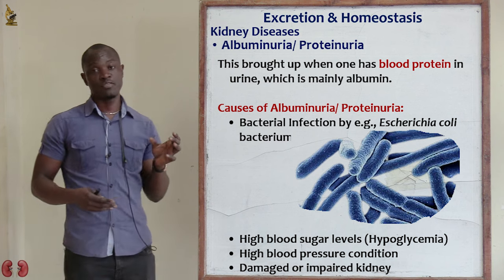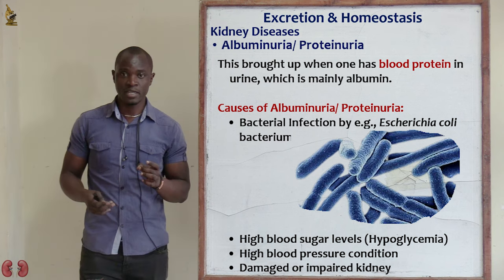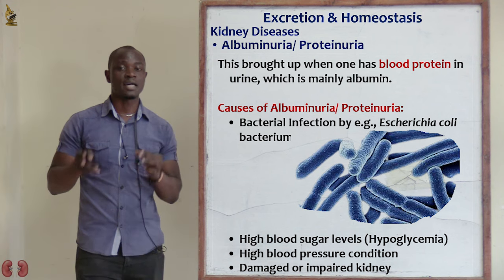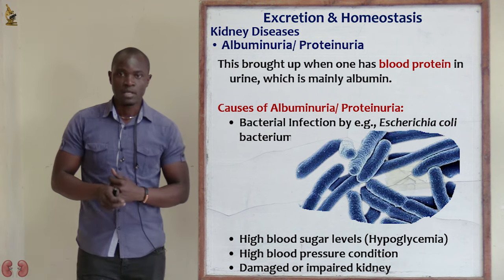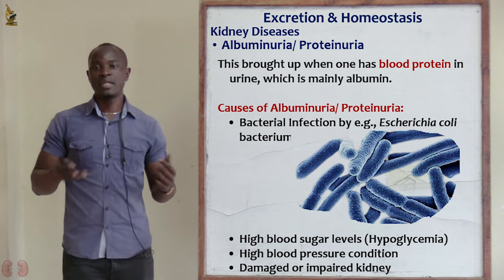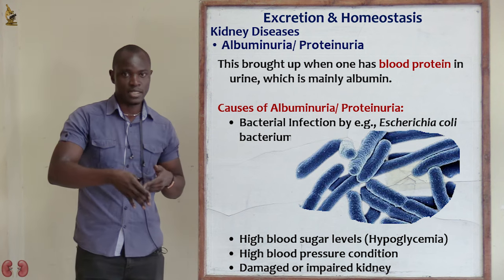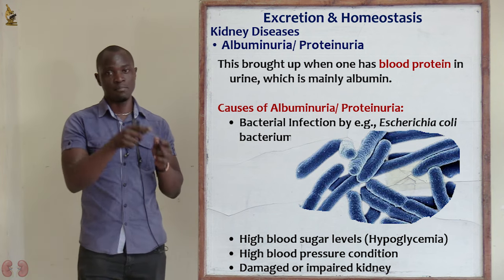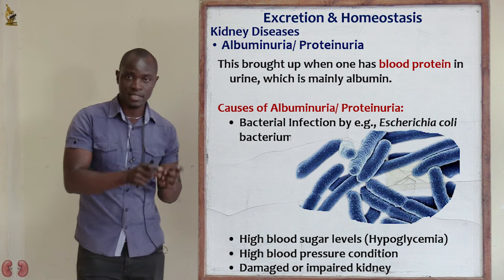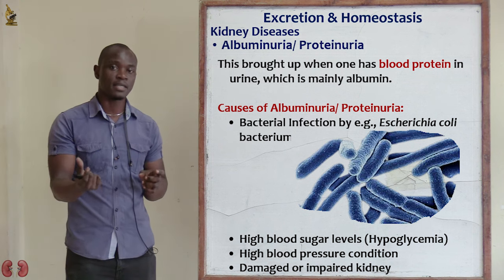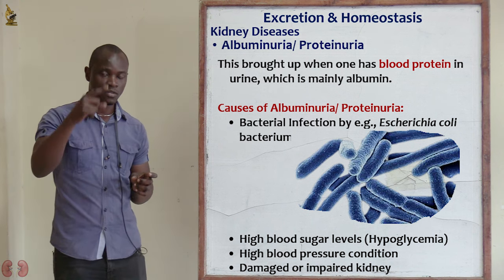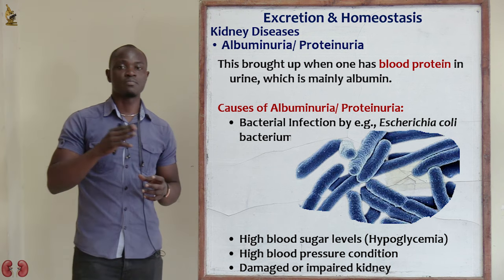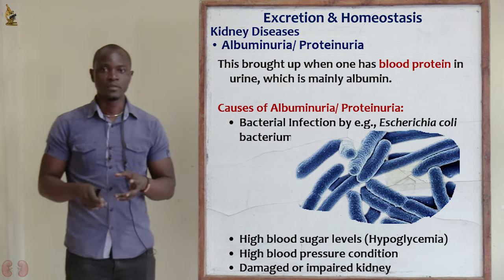So if you take the urine sample for a person suffering from this, we test the urine, we are going to find out that the urine contains albumin protein. Albumin mainly is a protein which is found in the blood. In mammals, it's found in blood. In birds, it is found inside the egg. So in the mammals, it's mainly found in blood only.